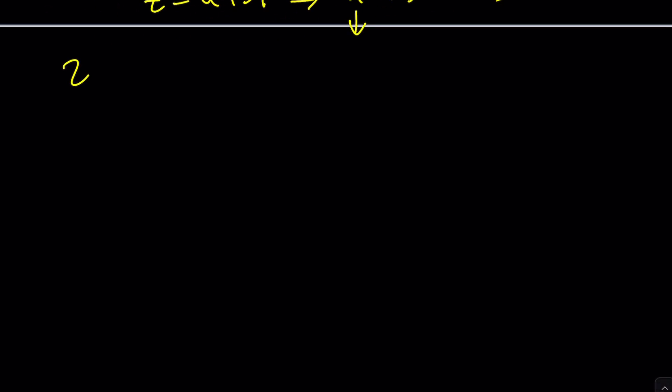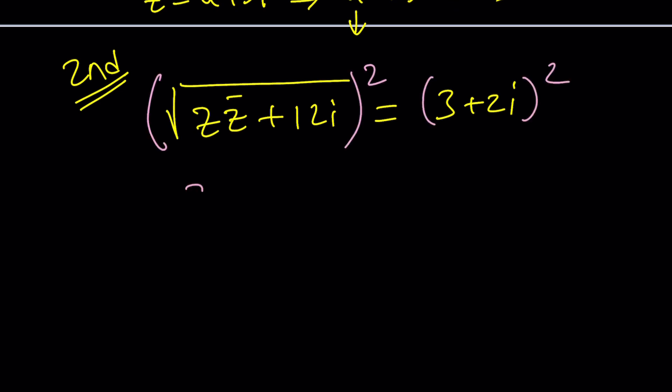Now let's go ahead and take a look at the second method which is not very different from the first method but it still hopefully is going to count as a valid method. First I square both sides. I don't really care what this product gives me. When I square both sides I get z times z bar plus 12i, and 9 minus 4 plus 12i. Again 12i is going to cancel out and we're going to end up with z times z bar equals 5.